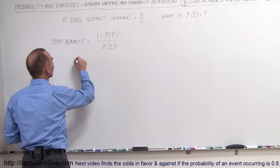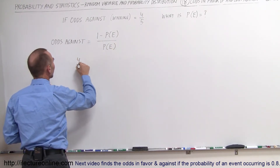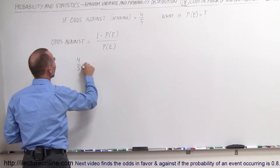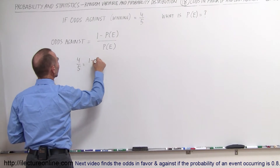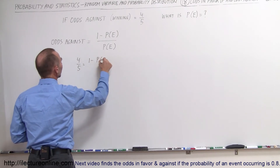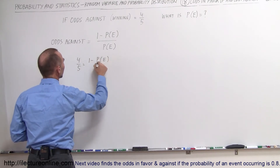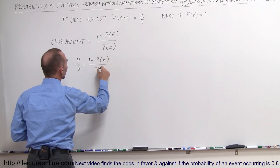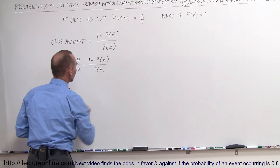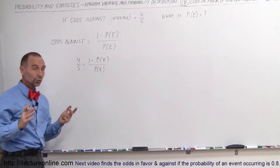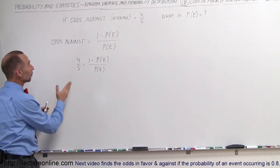So now we can say that four-fifths is equal to 1 minus the probability of the event occurring, divided by the probability of the event occurring. Now we're going to cross multiply.